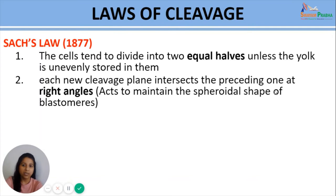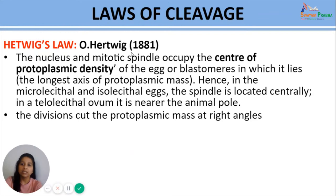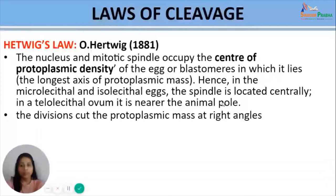The second law was given by O. Hertwig in 1881, which states that the nucleus and mitotic spindle occupy the center of protoplasmic density of the egg or blastomere. The spindle prefers to lie along the longest axis of the protoplasmic mass. In microlecithal and isolecithal eggs the spindle is located centrally, while in a telolecithal ovum where most of the vegetal pole is covered with yolk, the spindle is formed near the animal pole. The cleavage divisions cut the protoplasmic mass at right angles.